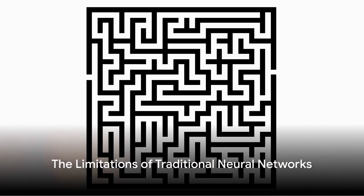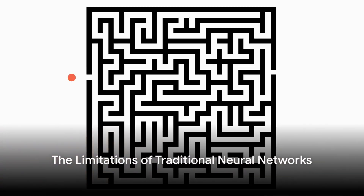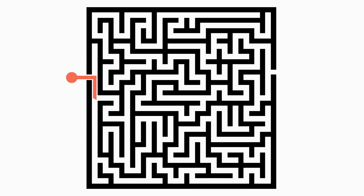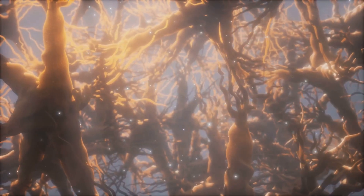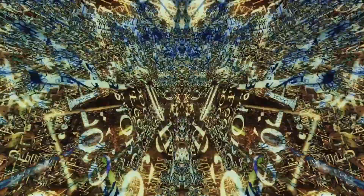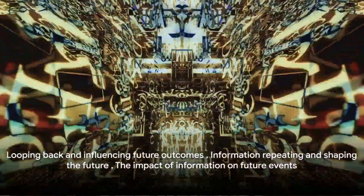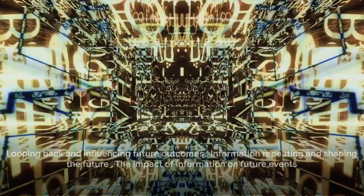Imagine a pathway in a maze. You start at the beginning, make your way through various turns and twists, and finally reach the end. Now think of this pathway as a traditional neural network — it's a one-way journey from start to finish. But life isn't linear, is it? Information doesn't just go in one direction; it loops back, repeats, and influences future outcomes.